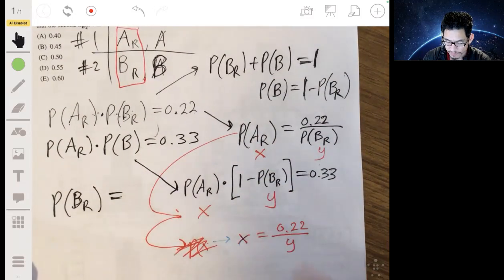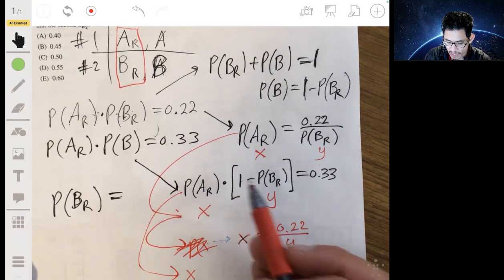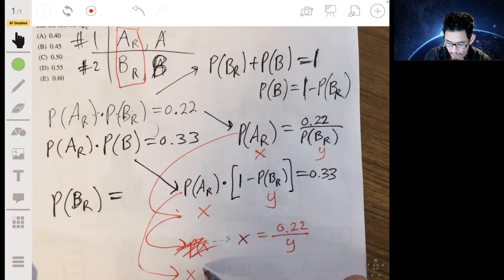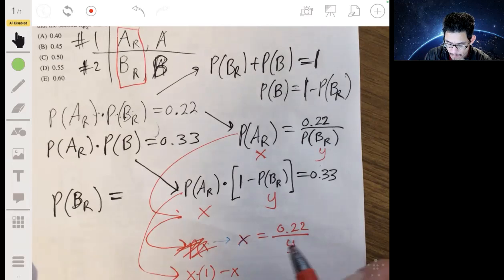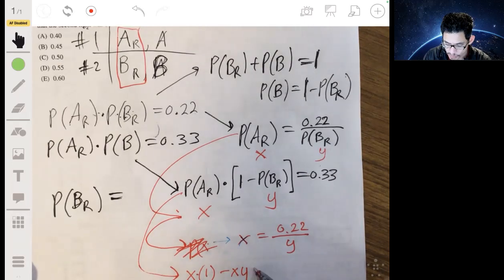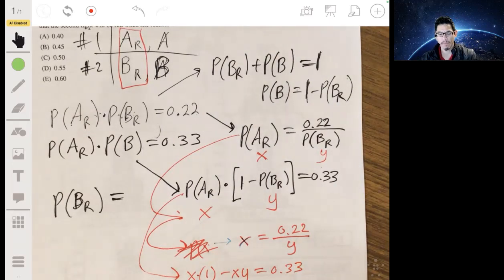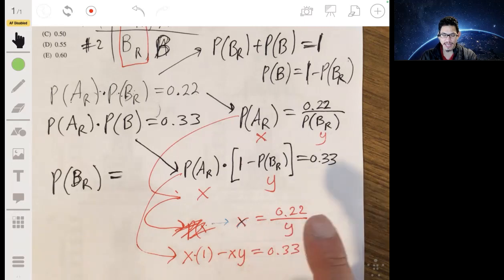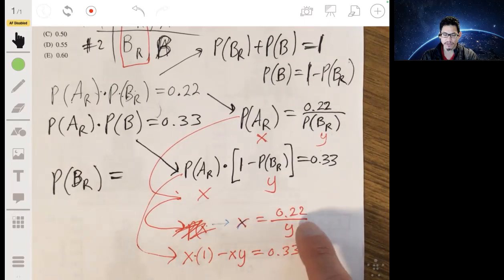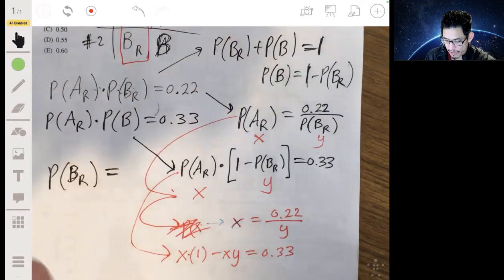I'm going to have to resort back to my red. So we'll just say X equals 0.22 divided by Y. Just replacing those with X and Y. And then Y would just be here. So this one allows us to write X times 1 minus Y equals 0.33. And then I can rewrite, put that X instead of that, for each X, I can just put 0.22 over Y in its spot. So what I can do here, plug that into this equation.